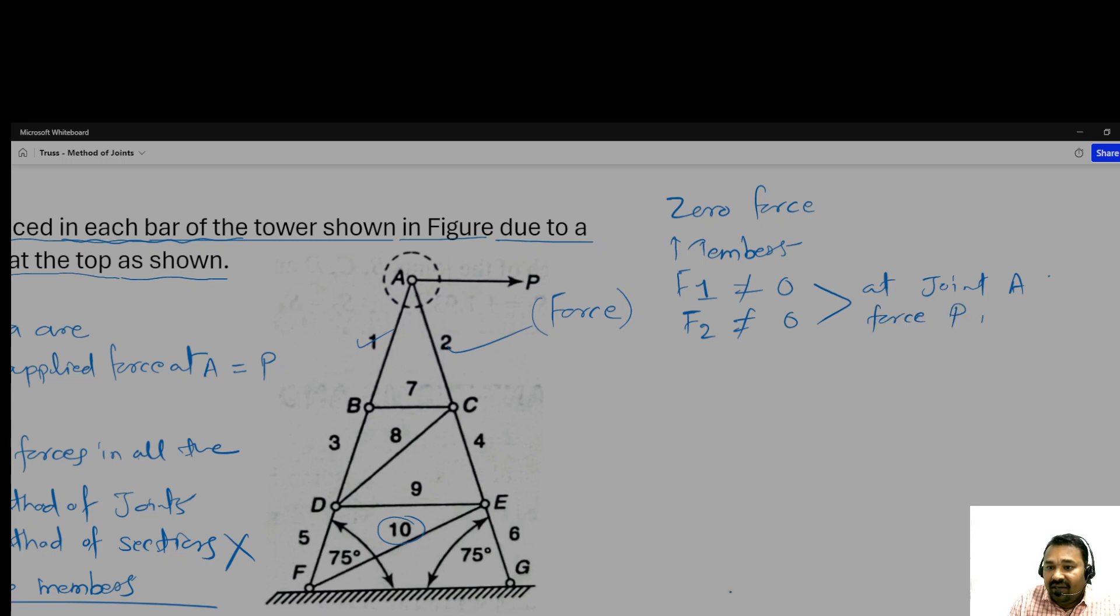What about at joint B? What about members F7, F8, F9, and F10? If F1 and F2 are not zero, then definitely F3, F5, F4, and F6 will not be zero. Why? Because F1 and F4 are both collinear.